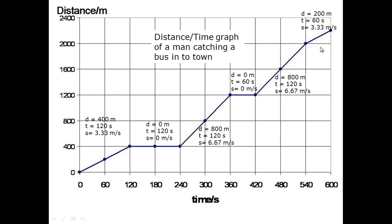What we can summarize from this is a straight line going upwards shows a constant speed. A flat line, like in this second section here, shows an object which is stationary. We also know that the steeper the line, the quicker the speed.